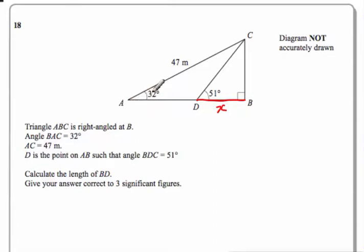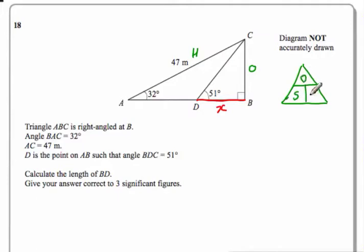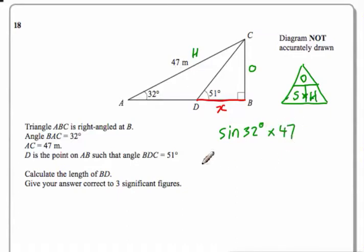I'm going to label up the big triangle. This is the angle we're working with, so this side is the opposite and this is the hypotenuse. I'm not interested in the adjacent at the moment, so I recognise that's sine. Using the sine triangle formula, to find O I do sine of the angle multiplied by the hypotenuse — so sine of 32 degrees multiplied by 47. I've done that on my calculator and got 24.906, and so it goes on — this gives me side CB.